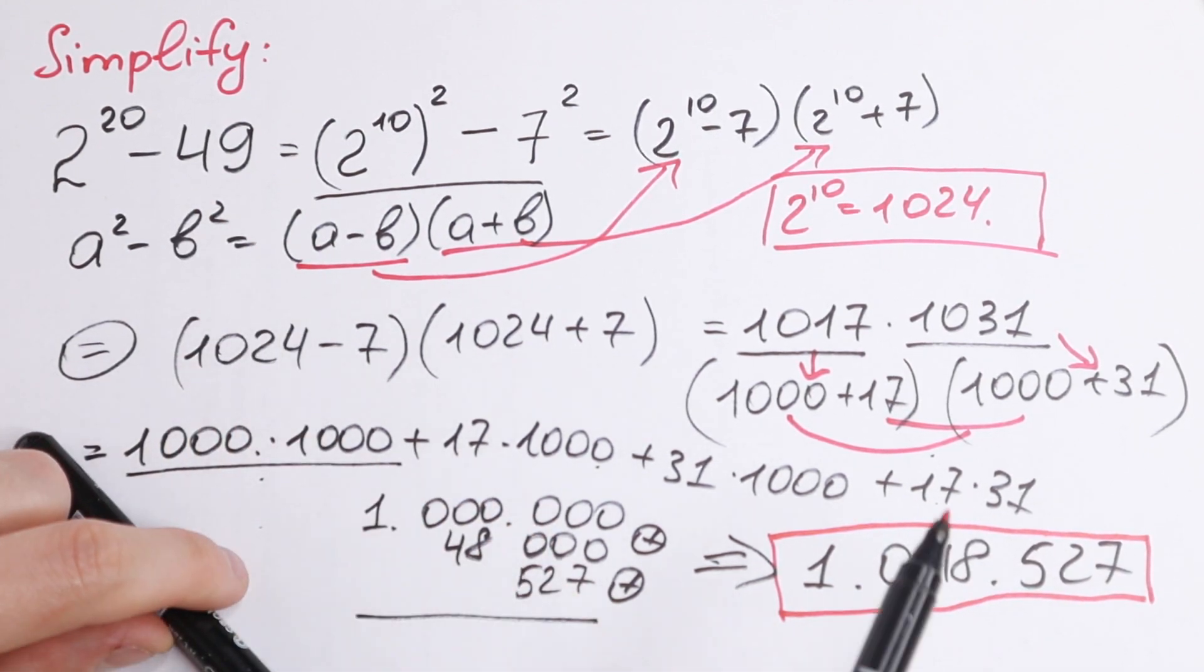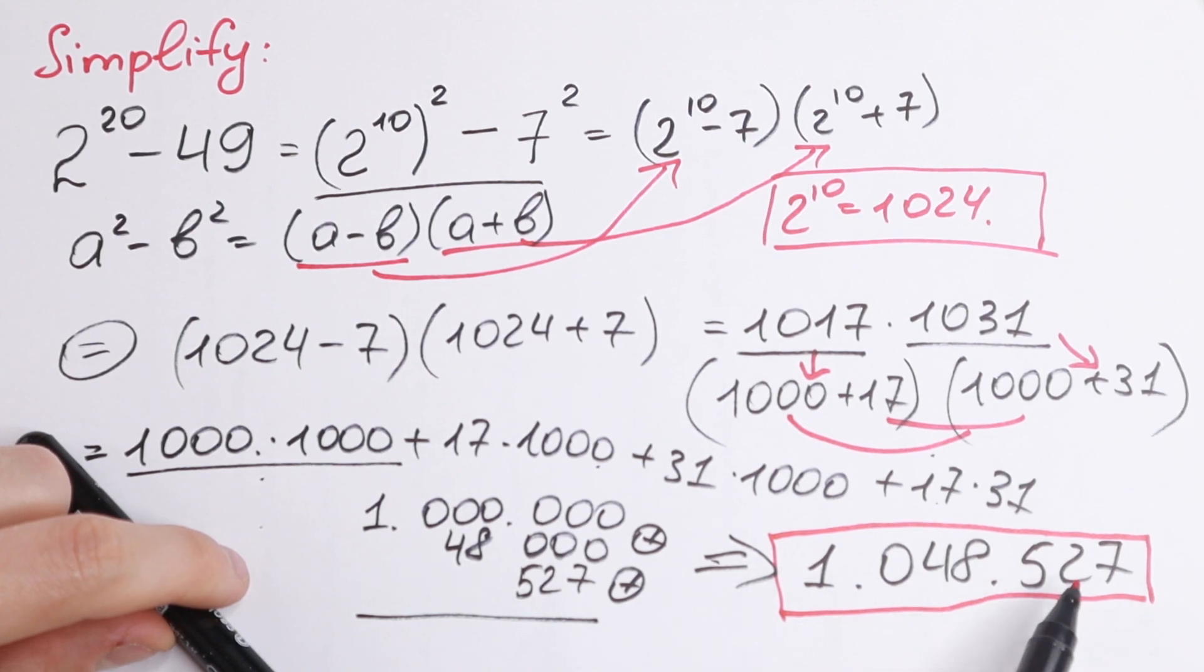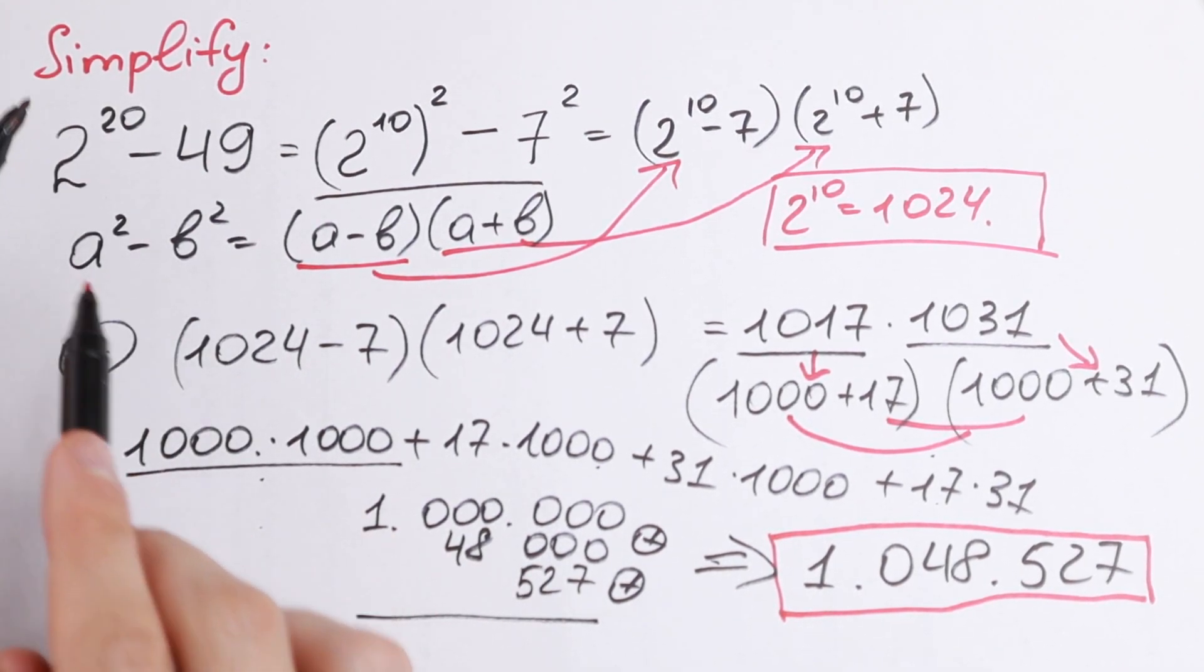So this is equal to this. 2 to the 20th power minus 49 equals this element. And if we add to this 48, we will have 2 to the 20th power.